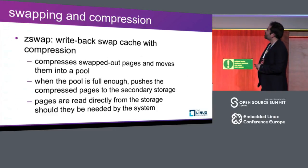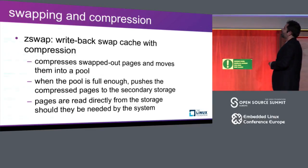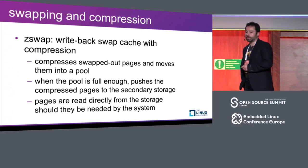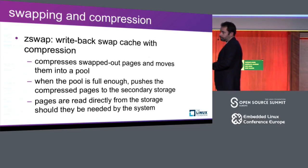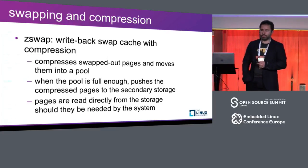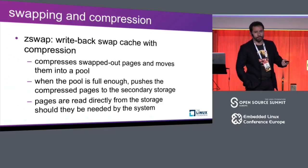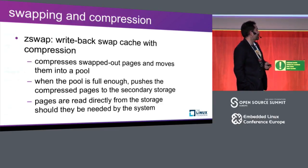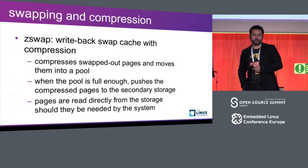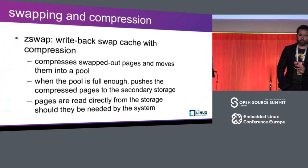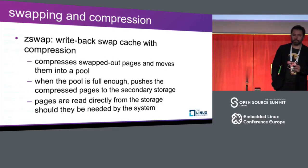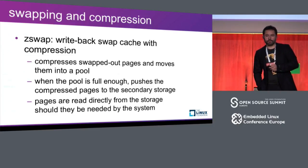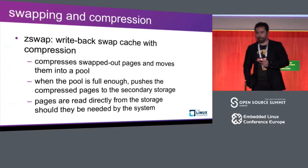The first swapping compression implementation is called Zswap - it's the first historically and in terms of frequency of use in Linux, in different situations. It is a write-back swap cache which allows for compression. What it does is exactly what we've been talking about: it compresses pages that are swapped out and moves those pages into a pool. When the pool is full enough, it uncompresses the pages and pushes them to a storage device. When they are needed, they are loaded directly from the storage device. In a sense, it's transparent to the swapping mechanism of the Linux kernel.